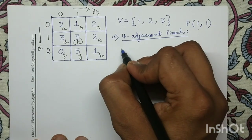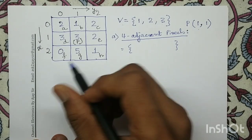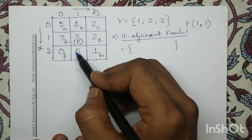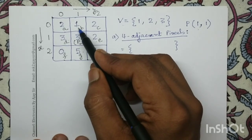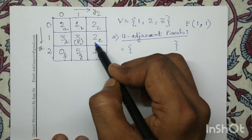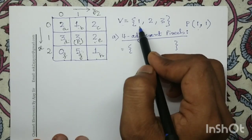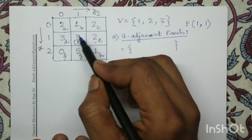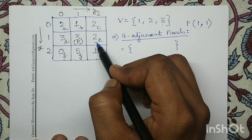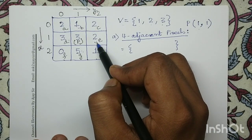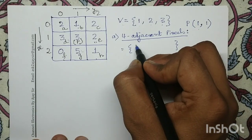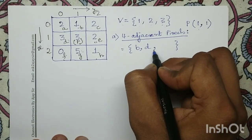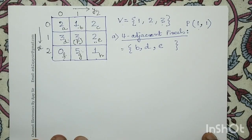For four-adjacent pixels, we target the four neighborhood pixels: B, D, G, and E. Among these, we check which have intensity values 1, 2, or 3. Pixels B, D, and E have intensity values in the V set. Therefore, the four-adjacent pixels to pixel P are B, D, and E.